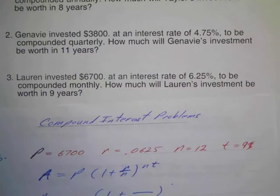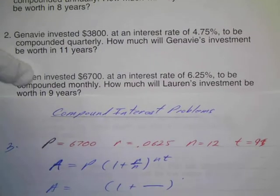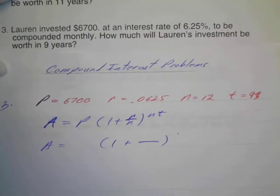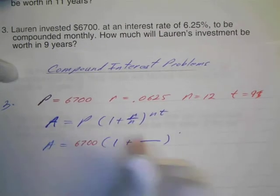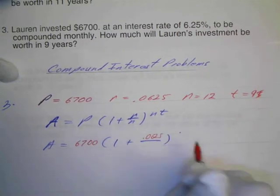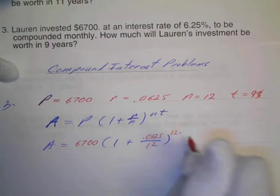Okay, so here's my formula and then I'll put my data into the formula and we'll use our calculators. So my principal is $6,700. My rate is 0.0625. N is going to be 12. And that's going to be 12 times nine.